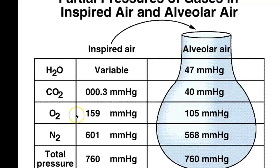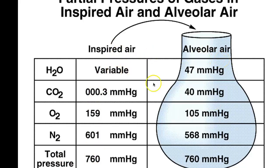So this is what the composition is. When we think about all the different components of air, the total pressure being 760, what I want to point out here is that inspired air differs from alveolar air. What we find is that alveolar air gives us those concentrations we just talked about: 568, 105, 40, 47.